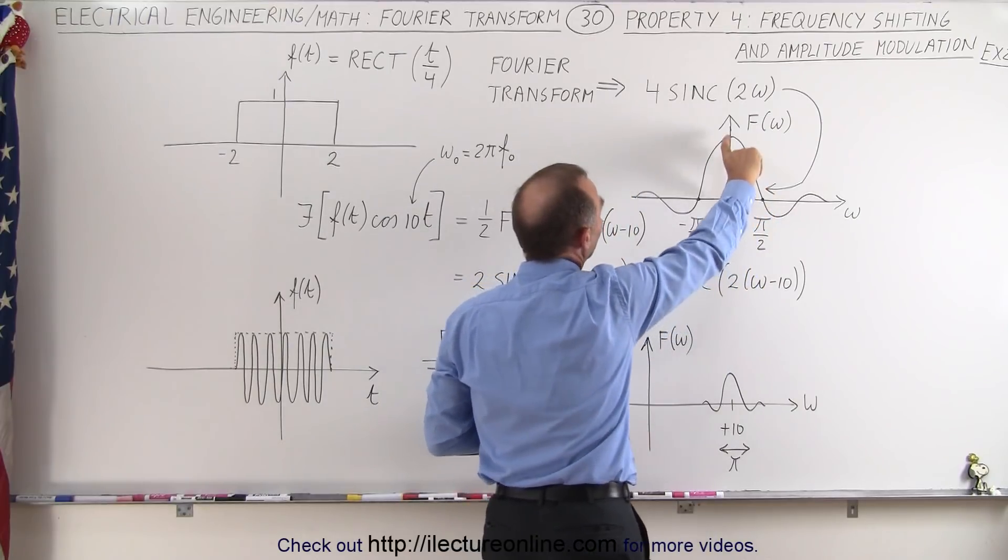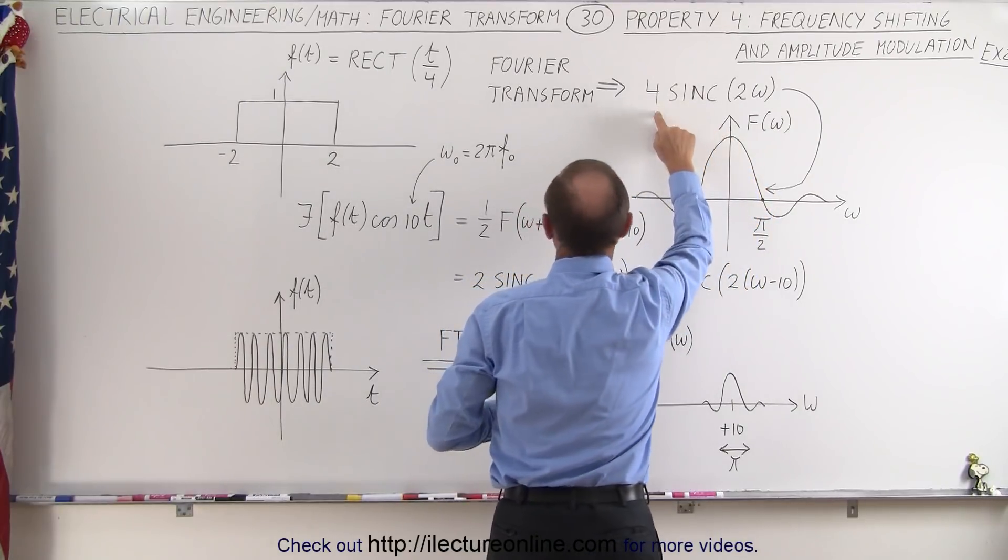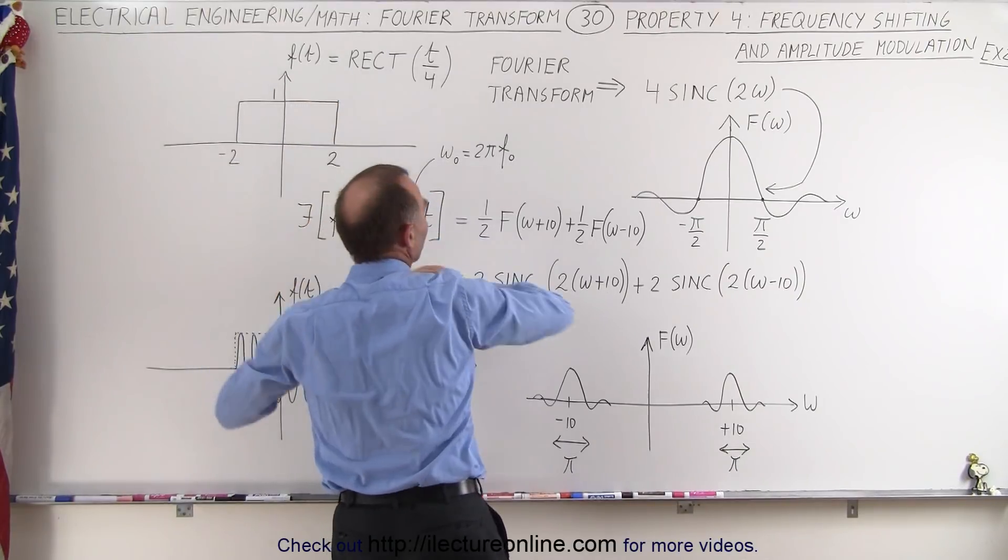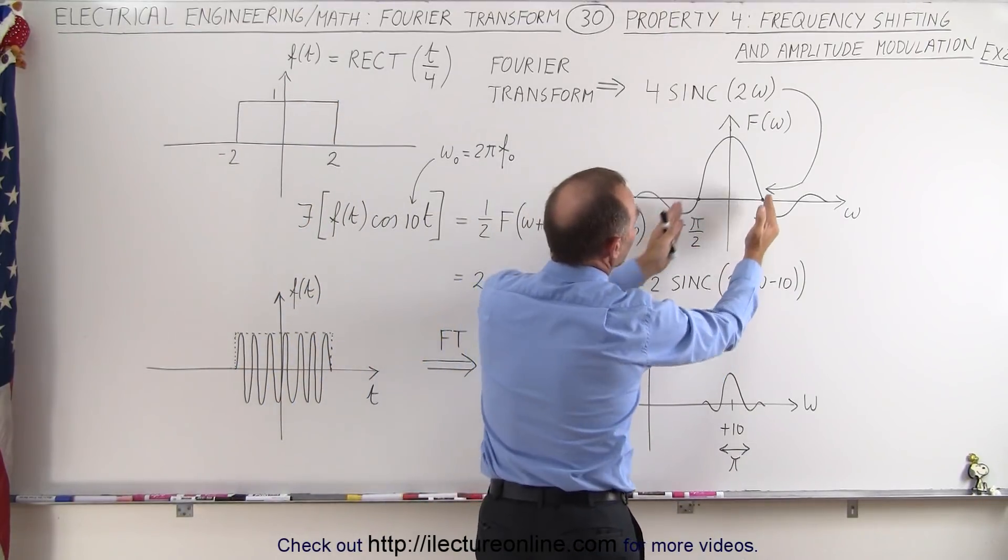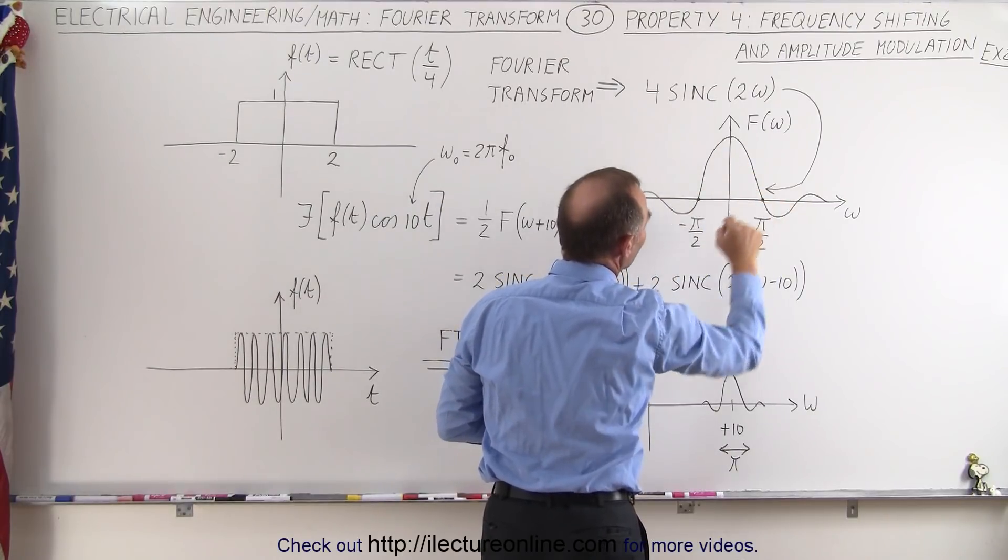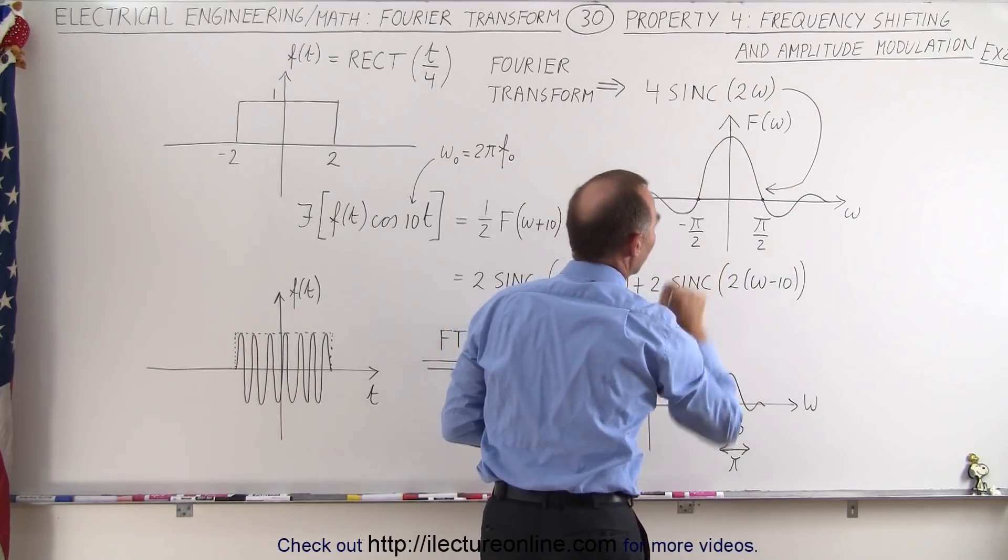Where the amplitude here would be 4 because the amplitude is the multiplication of the width times the height of the input rectangular function, and then of course we have the spread of the width here in the frequency domain from minus pi over 2 to plus pi over 2.